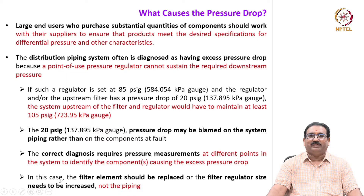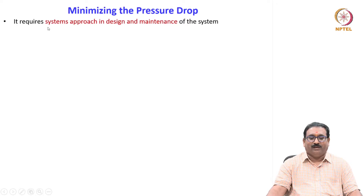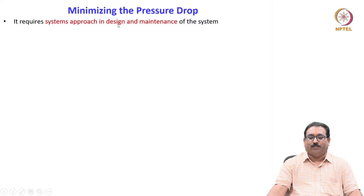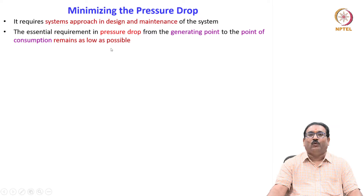In this case, a filter element should be replaced or the filter regulator size needs to be increased, not the piping. Minimizing pressure drop always requires a system design approach and proper maintenance of the system. The essential requirement is that pressure drop from the generating point to the point of consumption remains as low as possible.